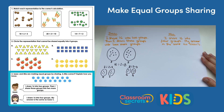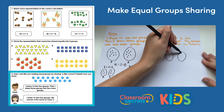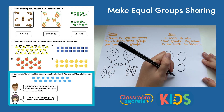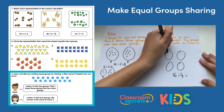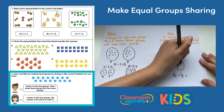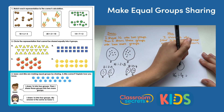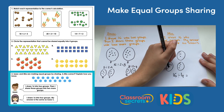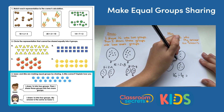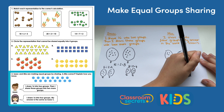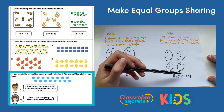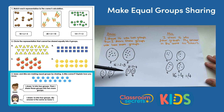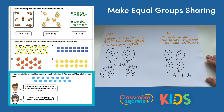Now let's look at Mia. She shares 16 directly into four groups. Sharing 16 into four, I can see there are four in each group, so her answer is four. The question was: is Mia correct — is her answer the same as Isaac's? She is correct, because she's got four in each group and Isaac also has four in each group.